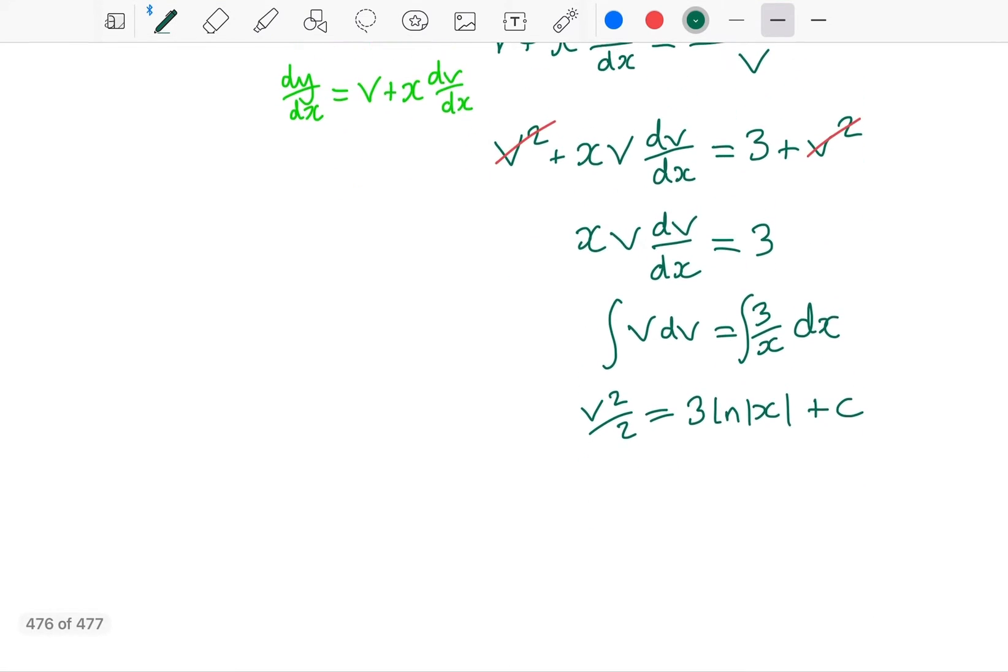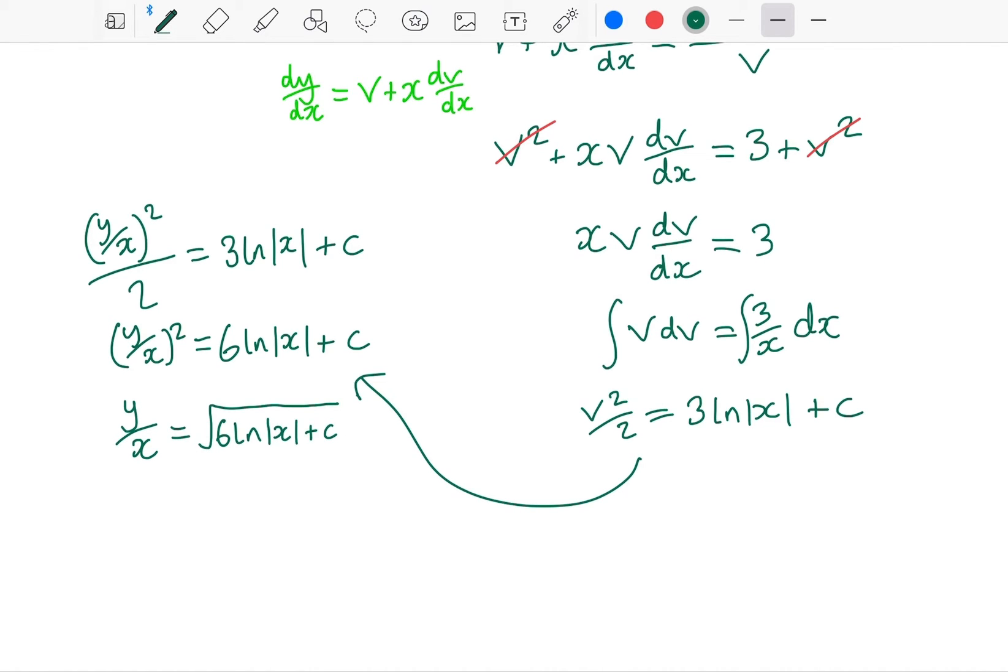I only need plus c on one side. And if we just go over here I'm going to substitute back now so that v equals y over x. I'm going to multiply by 2, and when I do that you could say that I now have 2c, but 2c is still just a constant and therefore I don't really need to write 2c, I can just still write c. I'm then going to square root, and then multiply by x. And I have solved my differential equation. And now I have my y as a function of x. And that is how solutions of differential equations are written.